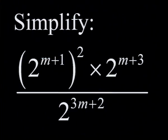Simplify: 2 to the power m plus 1 raised to the power 2 multiplied by 2 to the power m plus 3 all divided by 2 to the power 3m plus 2. Remember the order. First, raise to your power, then do the multiplication, which is adding your exponents.